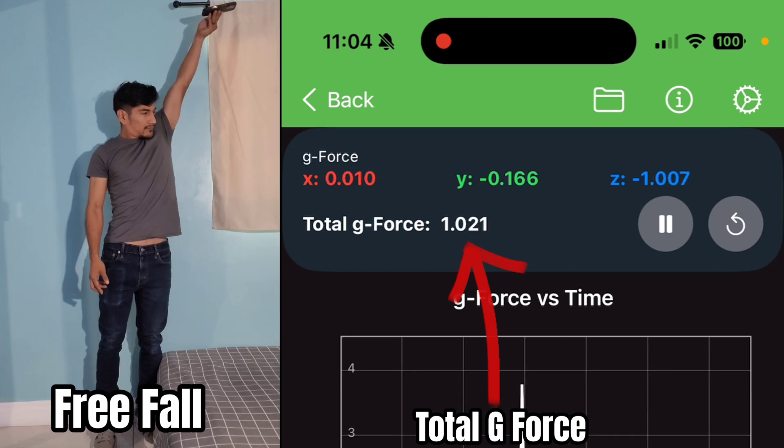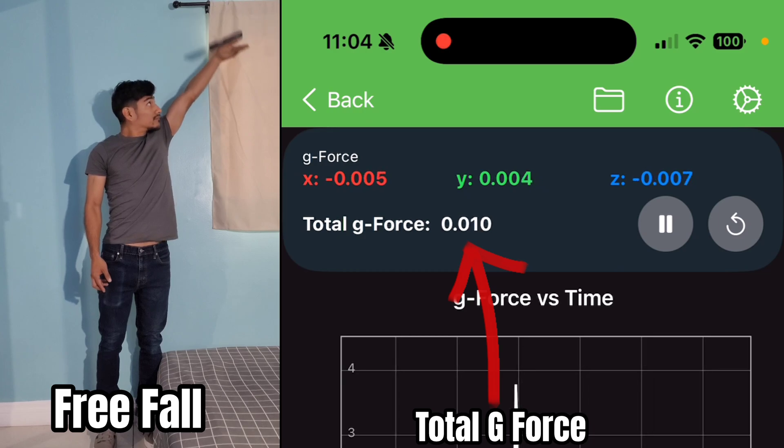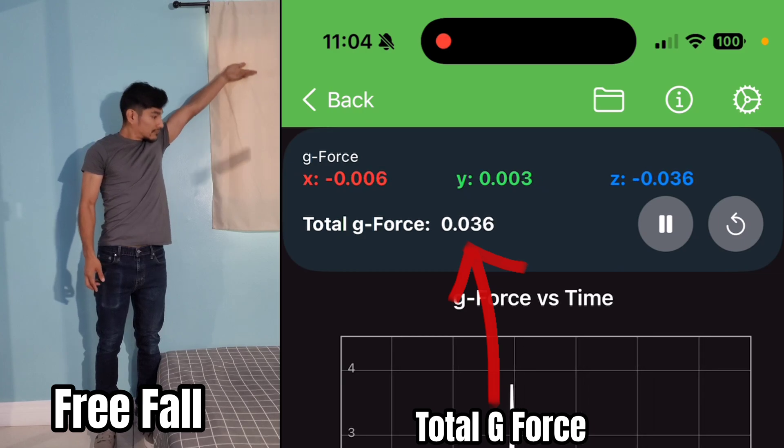Not only does the accelerometer show that there is no detectable acceleration in freefall, it also shows that the vector or force of the earth is up.